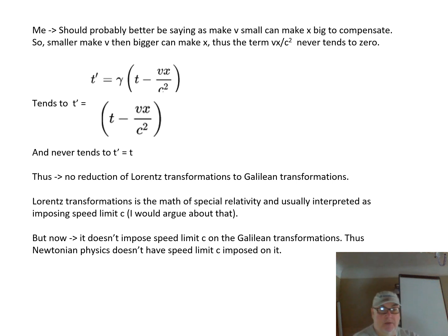Lorentz transformations is the maths of special relativity and usually interpreted as imposing a speed limit c. I would argue against that, but putting that issue aside, it now doesn't impose speed limit c on the Galilean transformations. Thus Newtonian physics doesn't have speed limit c imposed on it.